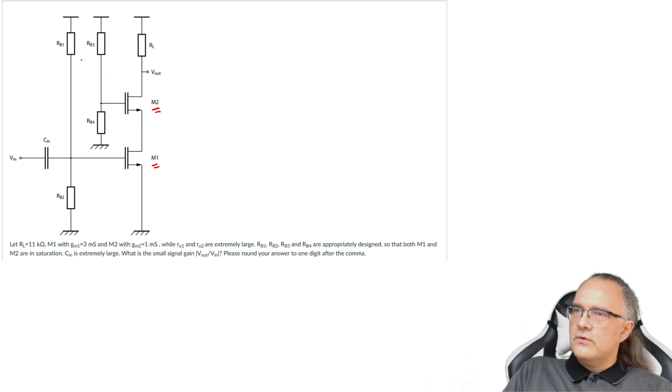We have also here biasing circuit. RB1 and RB2 form a resistive voltage divider to bias the gate of the amplifying transistor M1. The signal is provided via decoupling capacitor CIN here.